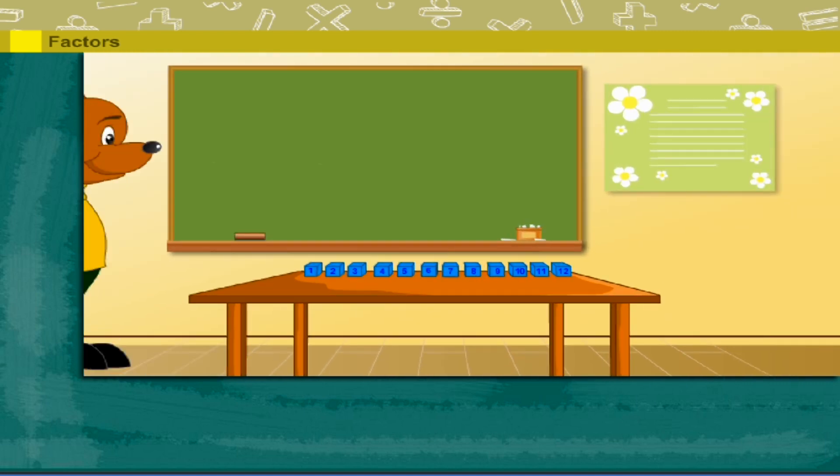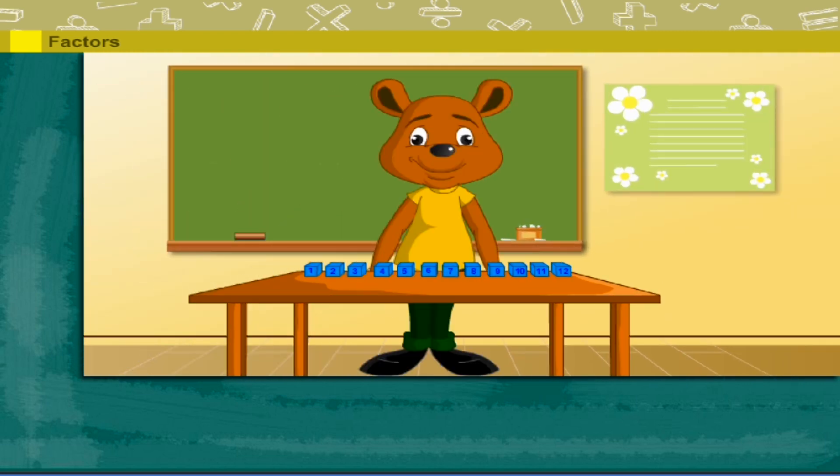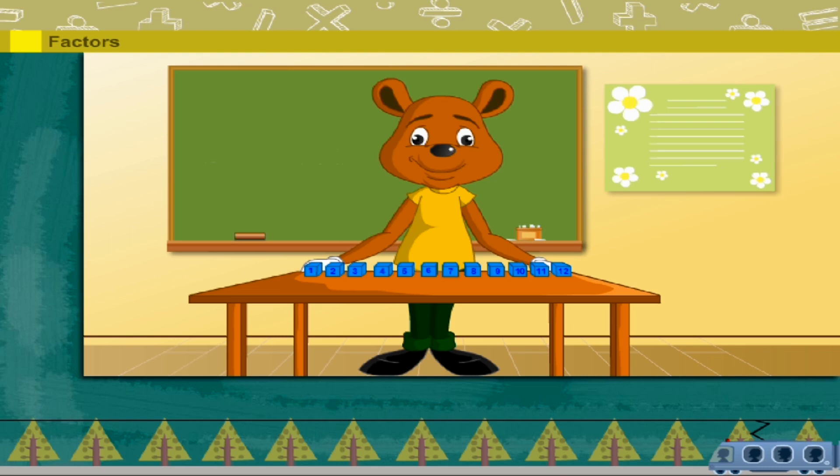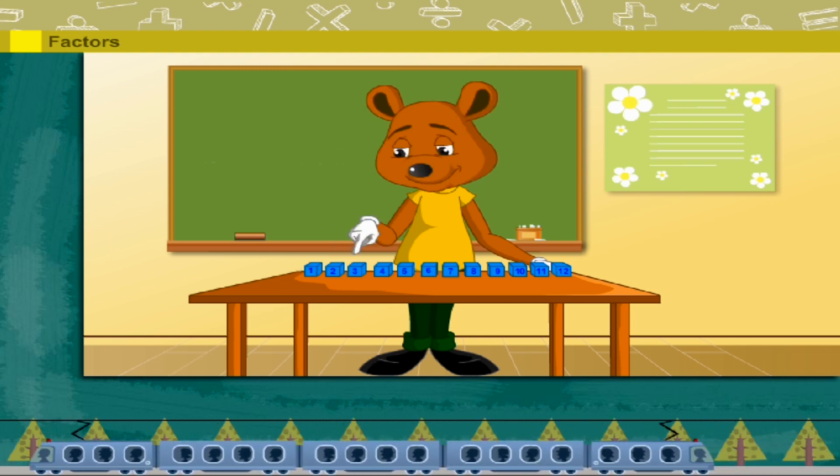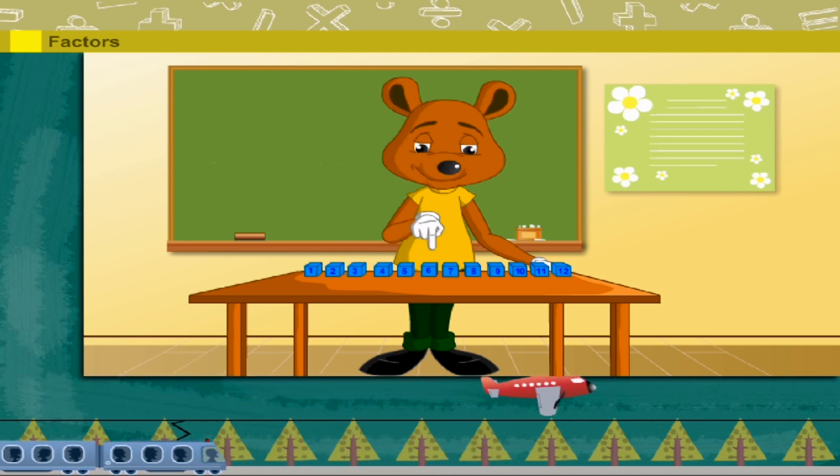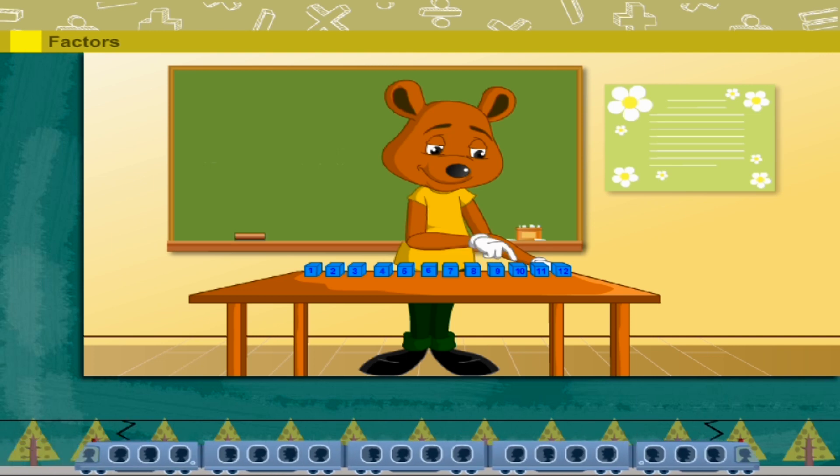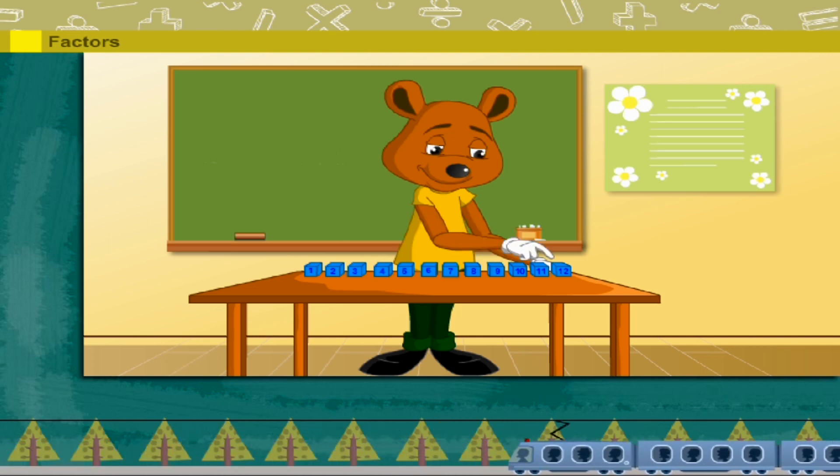Factors. Robbie is here to demonstrate factors. He counts the blocks in one row. One, two, three, four, five, six, seven, eight, nine, ten, eleven, twelve.